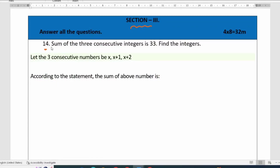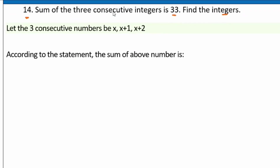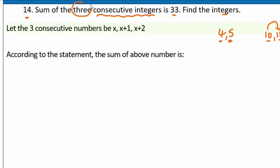Section 3, question 14: the sum of 3 consecutive integers is 33. Find all the integers. Consecutive means each number comes immediately after the previous. Let the first integer be x; then the three consecutive integers are x, x plus 1, and x plus 2.